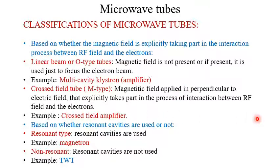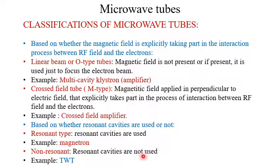We have another kind of classification based on whether resonant cavities are used or not. Based on that, we have the resonant type tube, where resonant cavities are used — the example is the magnetron. Another type is the non-resonant, where resonant cavities are not used — the example is the traveling wave tube or TWT.